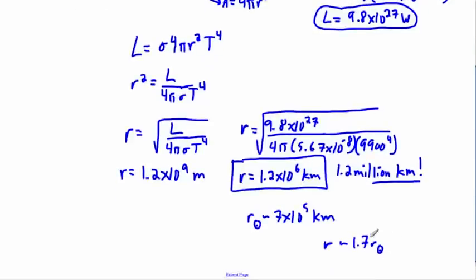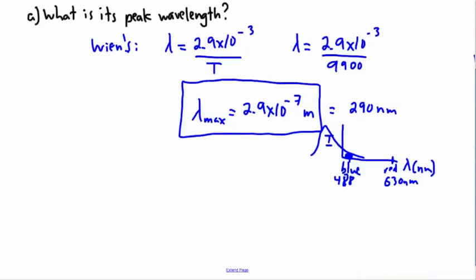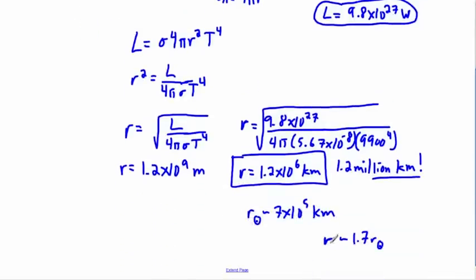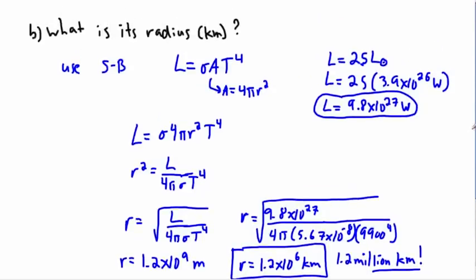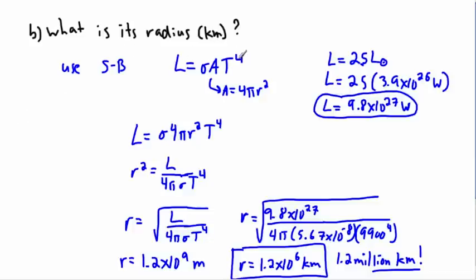There are other stars that are way bigger. In fact, there exist stars that are a million times the luminosity of the sun and much bigger in radius. So Sirius isn't really that luminous or that big compared to the sun — it appears bright simply because it's fairly close to us. Hopefully this is a nice example of using Wien's displacement law and Stefan-Boltzmann's law to find the peak wavelength and the size of a star.